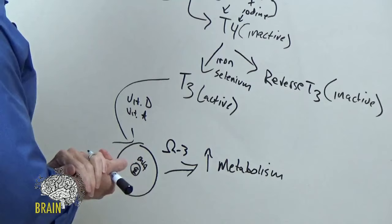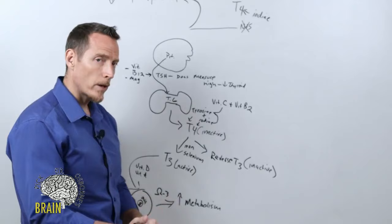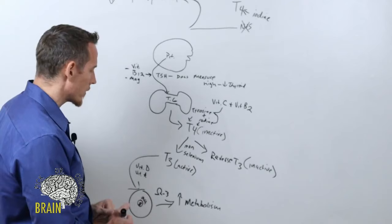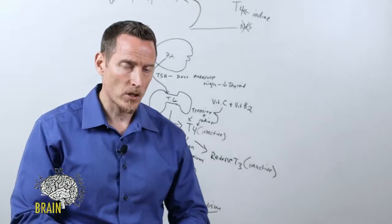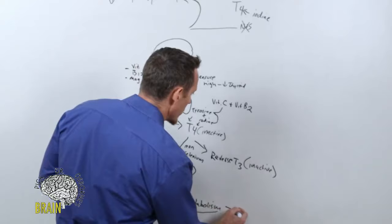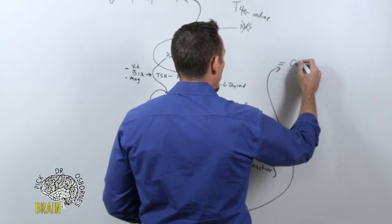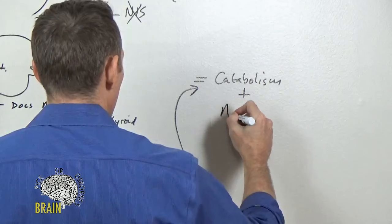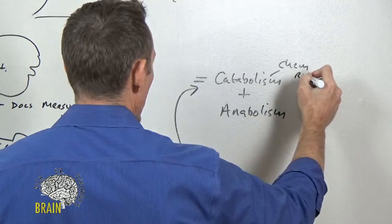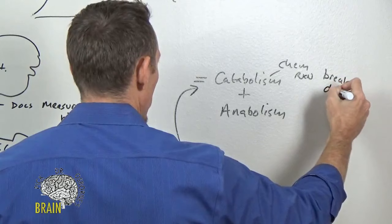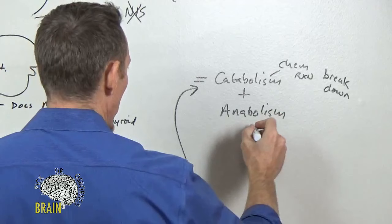If you're vegetarian and don't eat a lot of meat, it can be very challenging to get adequate quantities of omega-3 fatty acids. All these nutrients are necessary to increase metabolism. Remember, metabolism doesn't mean the speed at which you lose weight — metabolism equals catabolism plus anabolism. Catabolism involves chemical reactions that break things down, and anabolism involves chemical reactions that build things up.